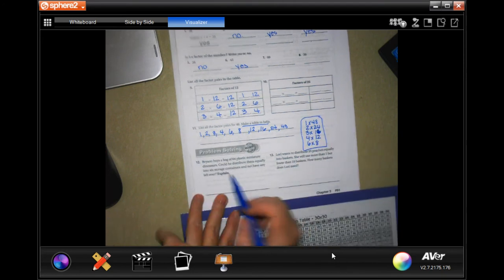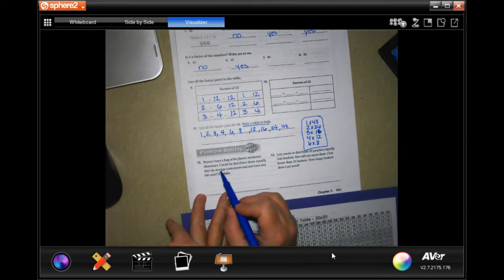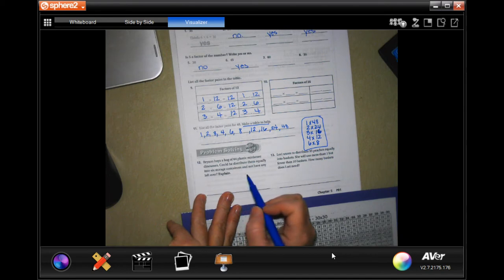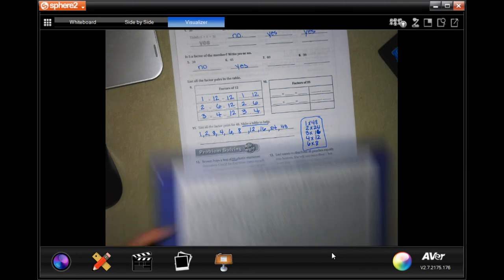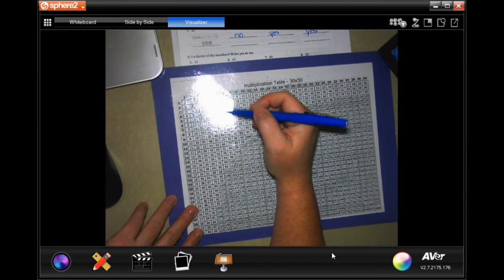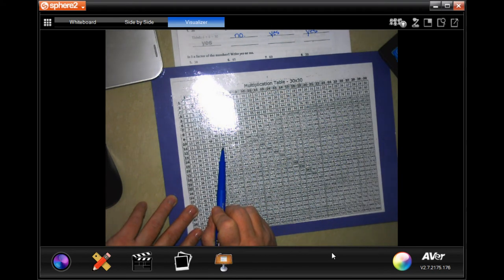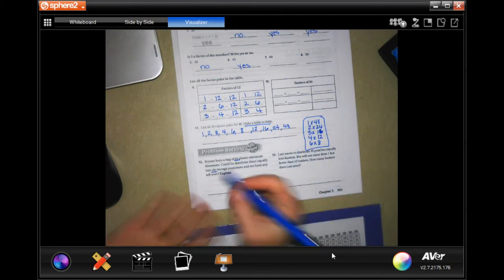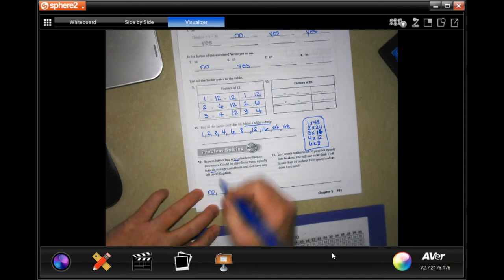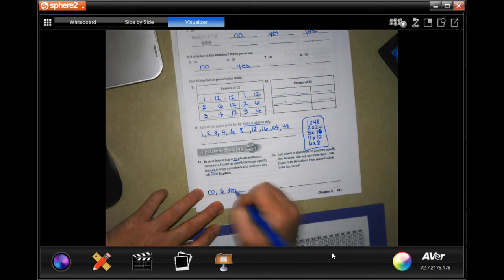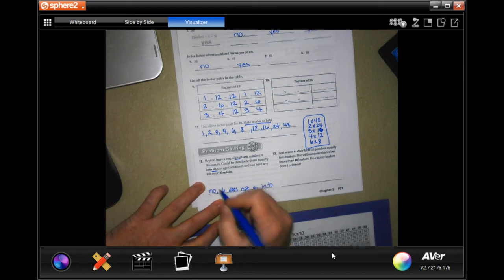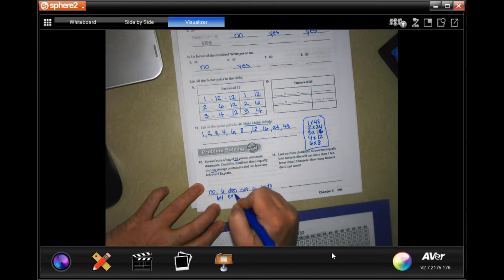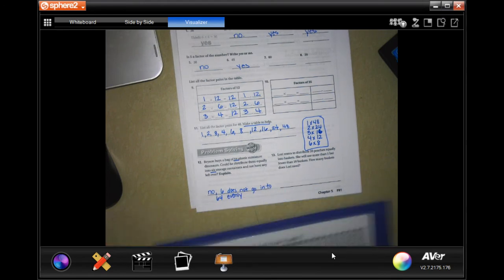All right, Bryson buys a bag of 64 plastic miniature dinosaurs. He could distribute them equally into six storage containers and not have any left over. Could he do that? So, 64, is that divisible by six? Well, let's go down six and see if we can get to 64. We can get to 60 and we can get to 66, but we cannot get to 64. So, no, six does not go into 64 evenly.